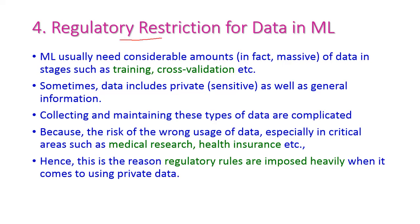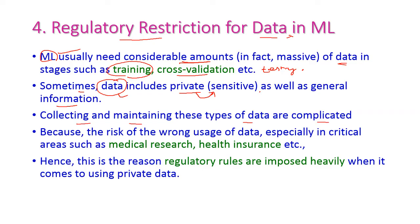The next problem is regulatory restrictions for data in machine learning. Machine learning algorithms require a considerable amount of data for training the model, cross-validating the model, and testing the model. Sometimes the data includes private information as well as general information, and private information is sometimes very sensitive. Hence, collecting and maintaining this type of data is very complicated because of the risk of wrong usage. The data can contain very sensitive information, especially in medical research, health insurance, and bank details. For this reason, regulatory rules are heavily imposed when it comes to private data.